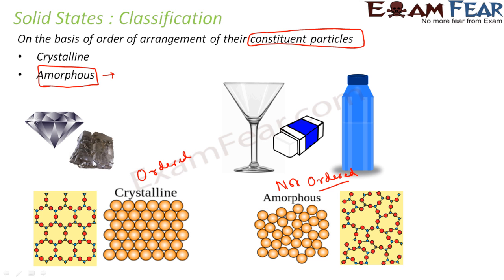Crystalline examples are gold and NaCl. Amorphous can be glass, rubber, plastic. But in this chapter, we will be focusing more on crystalline, not amorphous. So, let us study the crystalline and amorphous.